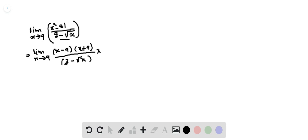So rationalize the denominator. That is 3 minus root x. So multiply and divide with 3 plus root x by 3 plus root x.